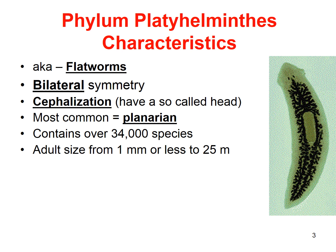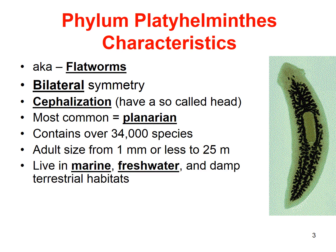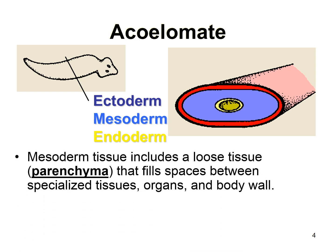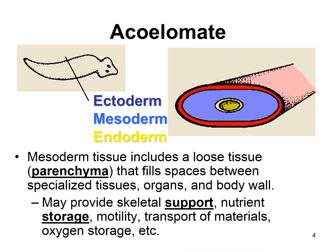The adults in this phylum can range from one millimeter to 25 meters long — that's twice the length of my classroom. They can live in marine, freshwater, and damp terrestrial habitats. They are acoelomates, meaning they do not have a true coelom. They have an ectoderm, a fluid-filled mesoderm region, and an endoderm. The mesoderm tissue includes a loose tissue called parenchyma that fills spaces between specialized tissues, organs, and the body wall. This area may provide skeletal support, nutrient storage, motility, and helps transport materials and store oxygen.